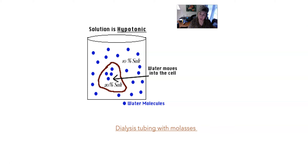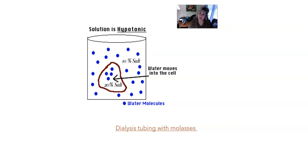If you have a hypertonic solution outside the cell, the membrane lets water pass through. Water moves from inside the cell to outside — from high concentration to low concentration. Hypotonic is the opposite: lots of water and very few sugar molecules outside compared to inside. So which way does the water move? There's more water outside than inside, so it moves into the cell. That gives you an idea of how these terms work.